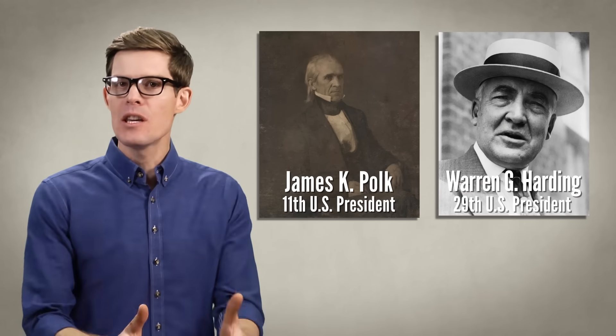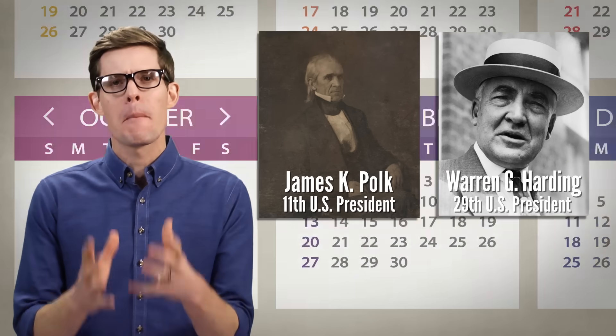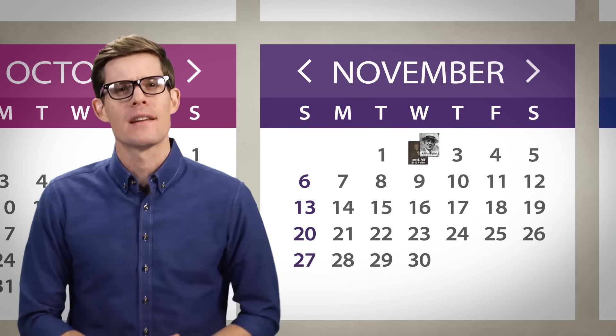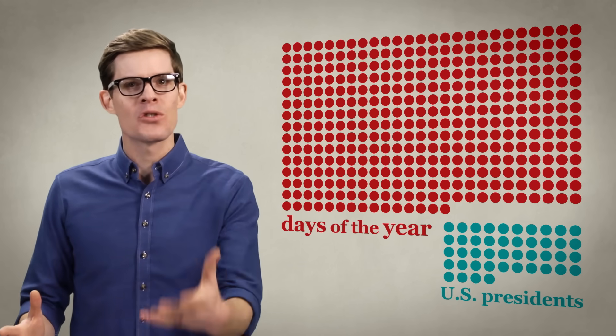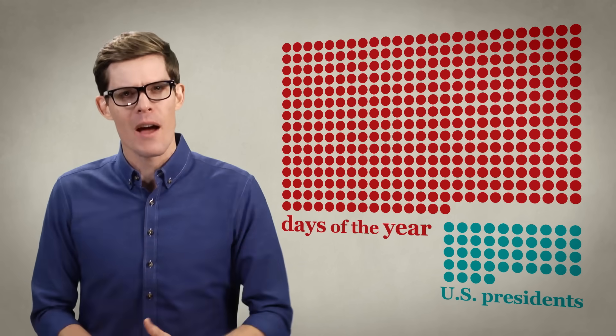James K. Polk and Warren G. Harding. Two presidents, both born on November 2nd. Now there are 365 possible days that a person could be born, so out of just 44 presidents, it's an amazing coincidence that two would share the same birthday, right?